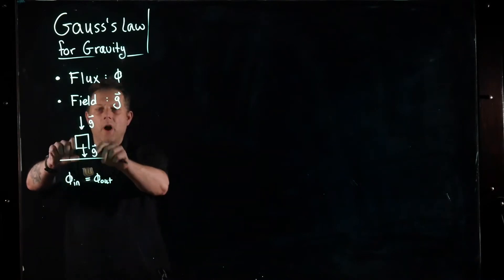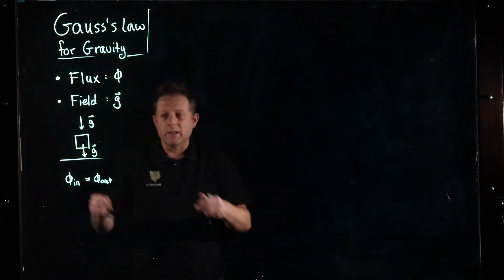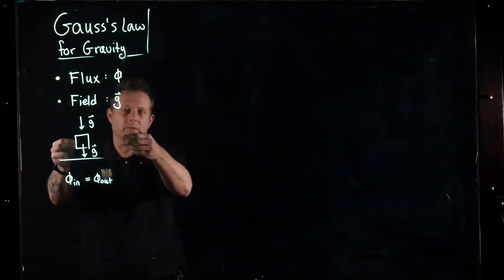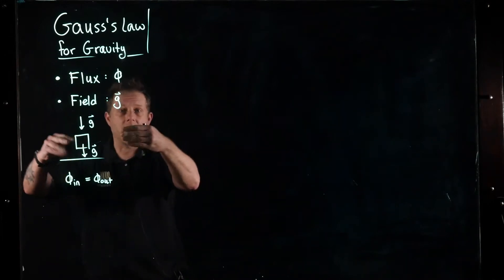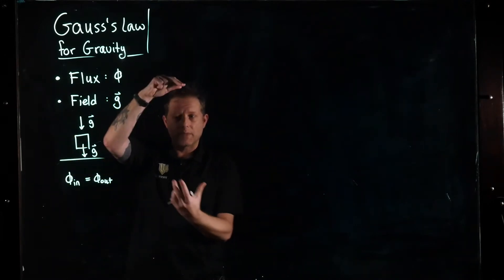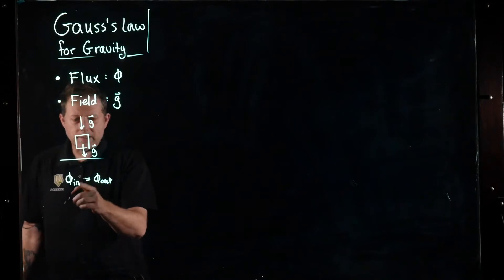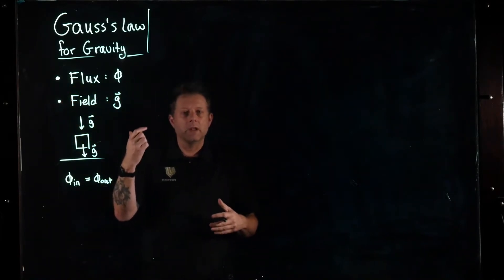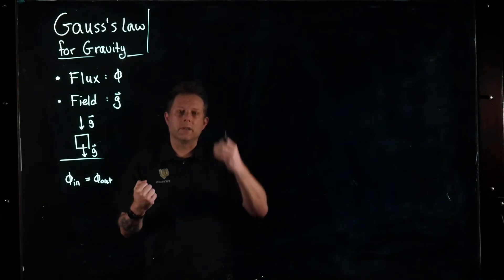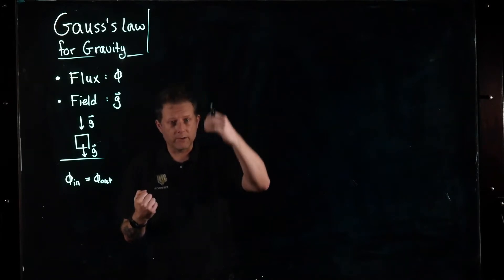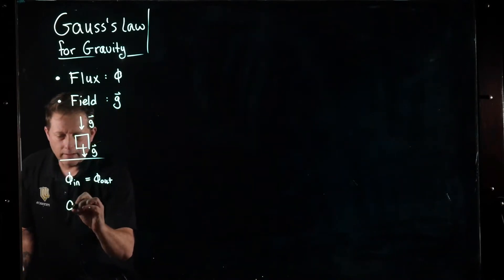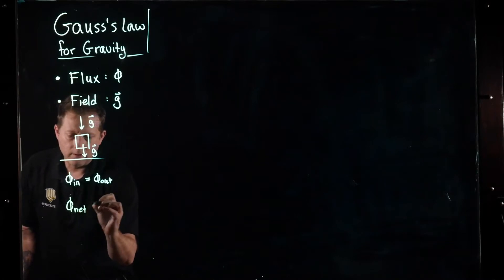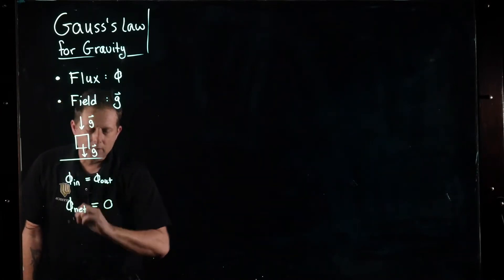Because of the orientation of the box and the orientation of the gravitational field, there's no flux entering the sides. So we only have to consider the top and the bottom. Since these two are equal and one is considered positive coming out of the box, one is considered negative going into the box, that meant that the net gravitational flux was equal to zero.